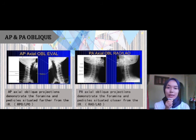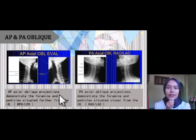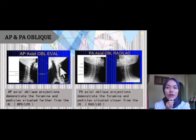I will start on how to differentiate between AP and PA oblique projection. For AP oblique projection, it will demonstrate the foramina and pedicle situated far from the IR. For PA oblique projection, it will demonstrate the foramina and pedicle situated close to the IR. This explains the position of the patient. Both pictures look alike, so another way to differentiate between AP and PA oblique projection is by looking at the appearance of the spinous process due to the different beam angulation, which is cephalad and caudad.